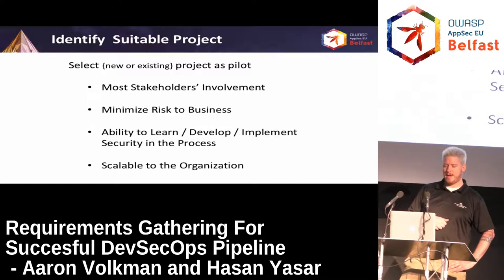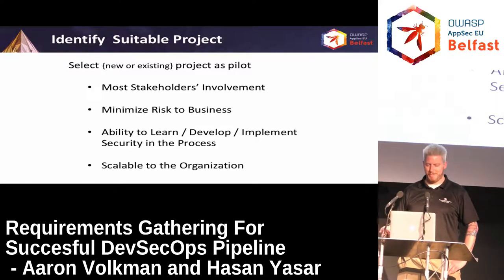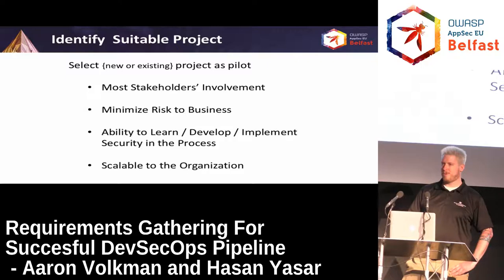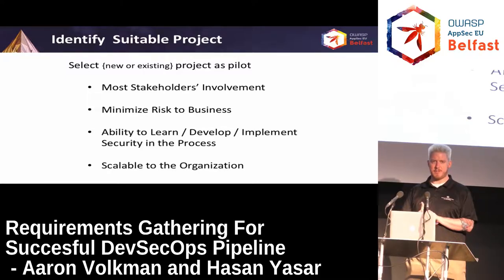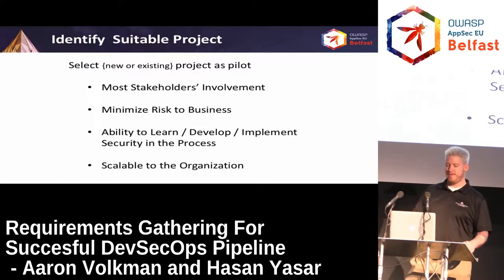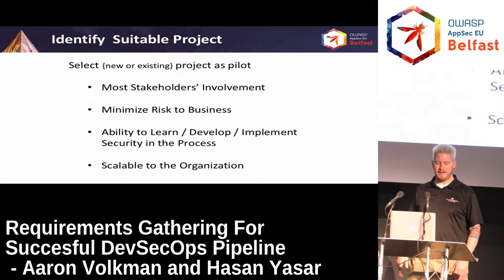Next step is identifying a suitable project. Select either a new or an existing project as a pilot — new ones are much easier since they're greenfield. Good candidates for a pilot are those with the most stakeholders involved so we have a large surface area of people with a stake in the game. We want a project that minimizes risk to the business in case something goes haywire or inevitably slows down in release. We want the ability to learn, develop, and implement security in the process, and hopefully take aspects of our pilot project and scale them to the rest of the organization — keeping in mind that DevOps in one team may look a little bit different from DevOps in another team.